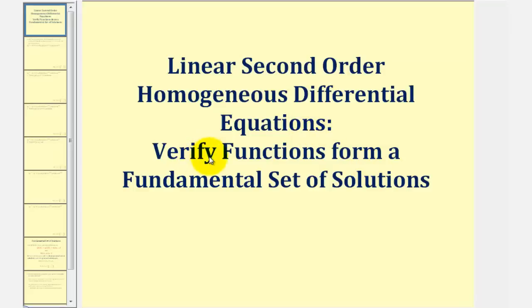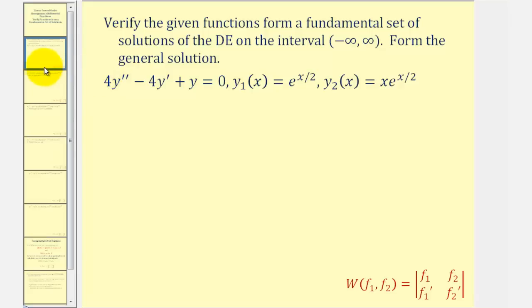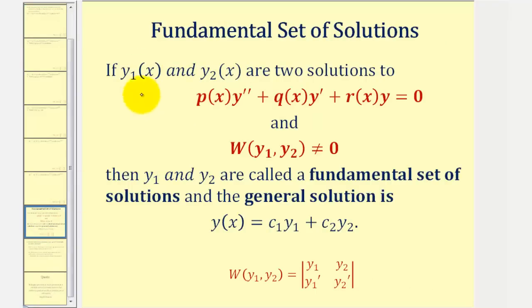Welcome to an example in which we'll verify that two given functions form a fundamental set of solutions to a linear second order homogeneous differential equation. Our goal is to verify that y₁(x) and y₂(x) form a fundamental set of solutions on the given interval and also form the general solution. If y₁ and y₂ are solutions to the differential equation and the Wronskian is not equal to zero, then y₁ and y₂ form a fundamental set of solutions and can be used to form a general solution.